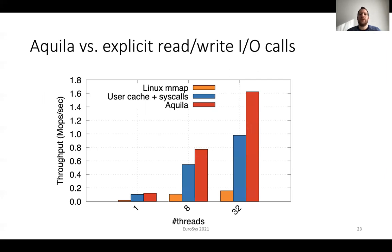First, we compare Akila with explicit read-write system calls and provide an evaluation in terms of throughput using RocksDB. The x-axis shows the number of threads and the y-axis shows the throughput in millions of operations per second. We show three bars: the orange one is for RocksDB with Linux EMAP, the blue one for RocksDB with a user space cache and system calls, and the red one for RocksDB with Akila. With a single thread, Akila provides about 1.2 times higher throughput compared to a user space cache. With 8 threads this increases to 1.4 times, and with 32 threads to 1.6 times. Akila outperforms a user space cache with system calls to access persistent storage.